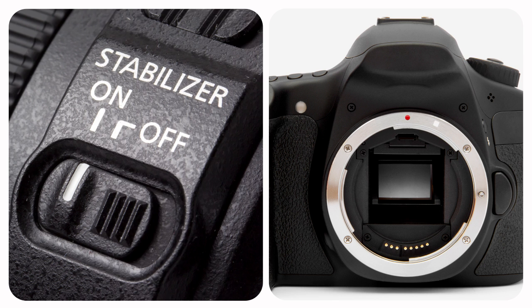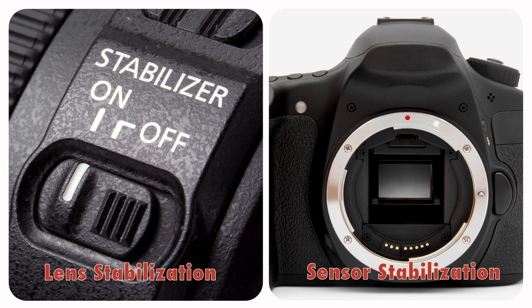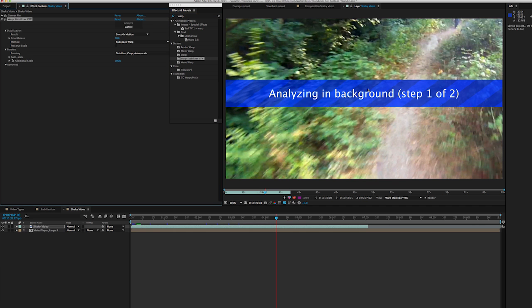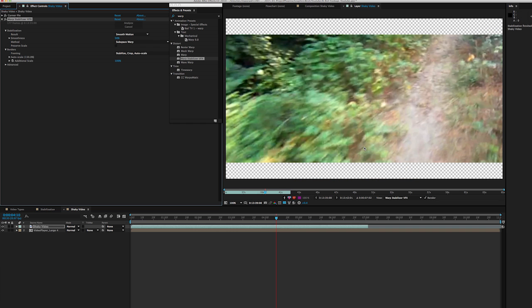Think about filming a video with your smartphone's camera. It's difficult enough to capture a moment as it happens, let alone holding your hands perfectly steady and moving the camera smoothly. There are several ways to stabilize a video. You can stabilize while filming by using mechanical features of the camera or sensors that track the camera's motion, or you can stabilize the video after it's been filmed by analyzing the content of the images within the video.